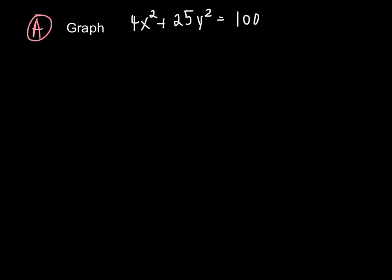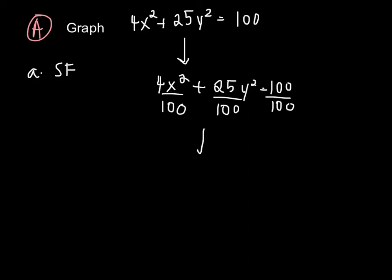In a problem, we're going to be told to graph 4x squared plus 25y squared equals 100, and additionally we're also told to identify the vertices and the foci. Our first step is to write this equation in standard form. We can take this equation and divide everything by 100, and now we have x squared over 25 plus y squared over 4 equals 1.